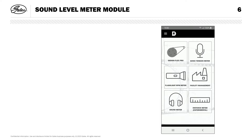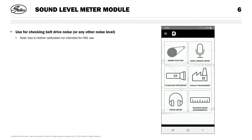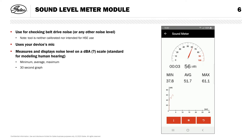Next, we'll look at our Sound Level Meter module. You can use this for checking your belt drive's running noise level, or any other noise level for that matter. Please keep in mind that this module is neither calibrated nor intended for health, safety, and environment usage, but rather as a reference point. This tool uses your device's built-in microphone. I'll tap the tile, and you'll see the app displays the instantaneous noise value, the minimum, average, and maximum values for the session, and a graph of the level over the last 30 seconds. All measurements are in decibels on an A-weighted scale, the standard for modeling human hearing.